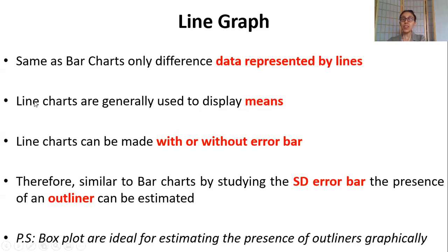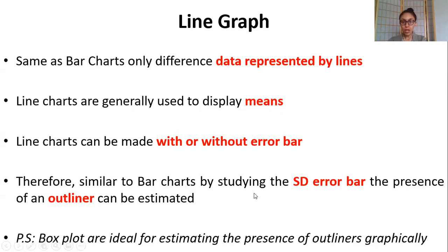Then you have line graphs, which are similar to bar charts — the difference is that data is represented as a line rather than bars, just like the relationship between histograms and frequency polygons. They are two sides of the same coin. Line graphs are generally used to display means, with or without error bars. The same rules apply as for bar charts — you can display medians and confidence intervals as well. Bar charts and line charts can both indicate an outlier through a large standard deviation error bar, but confirm with a box plot. Box plots are ideal for identifying outliers.